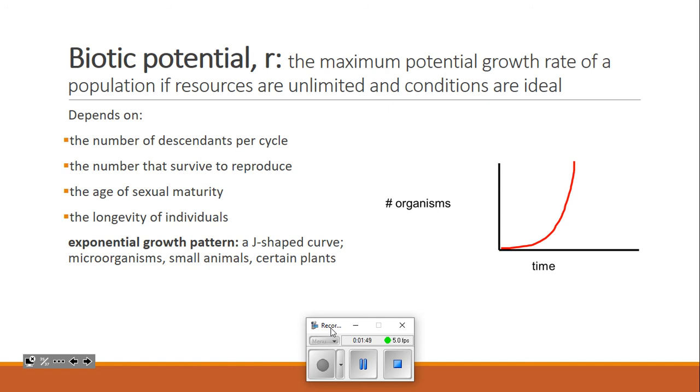Biotic potential, if we read, is the maximum potential, and if you have the word potential written down, circle it or highlight it. It's a potential maximum potential growth rate of a population if resources are unlimited and conditions are ideal. Now, if you had to bet on whether resources are unlimited and conditions are ideal most of the time, I hope you would bet against that. For most organisms, most of the time, resources are not unlimited and conditions are not ideal. But for some organisms, some of the time, this could be the case.